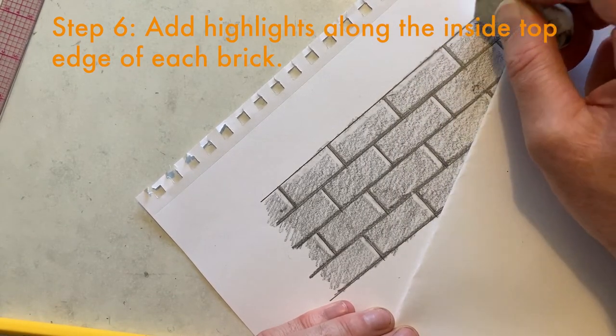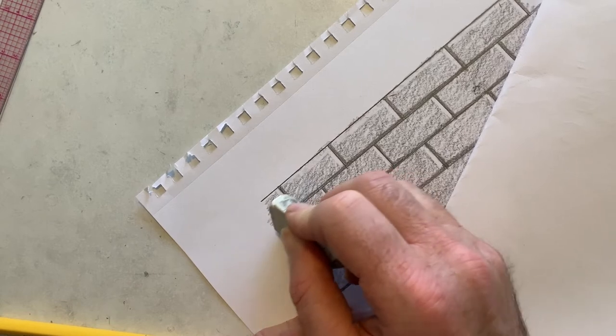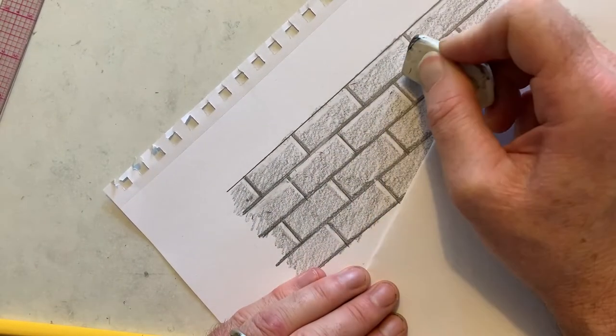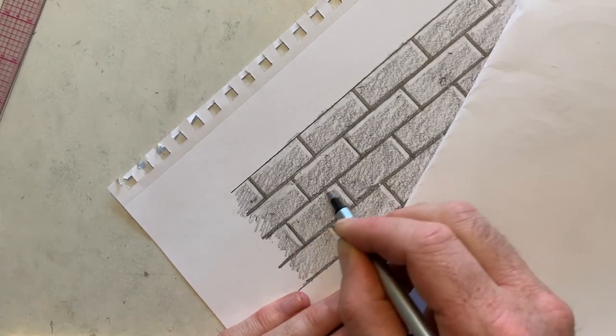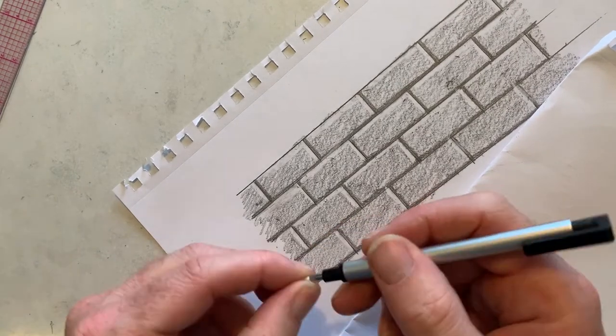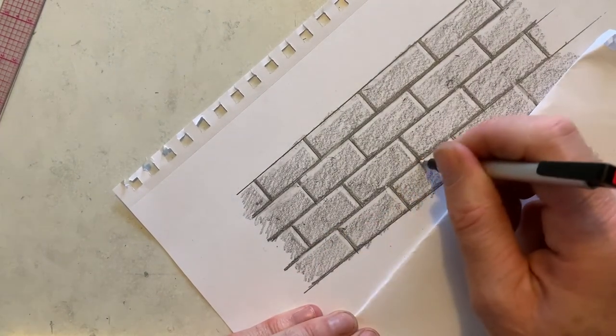Now be aware that it's really easy to smudge the highlights with your filthy hand. So start in the upper left corner when you start highlighting like I'm doing. Or of course start in the upper right corner if you're a lefty. Or rotate your paper or put some paper down as a shield. Whatever makes sense to you so you don't smudge the highlights.